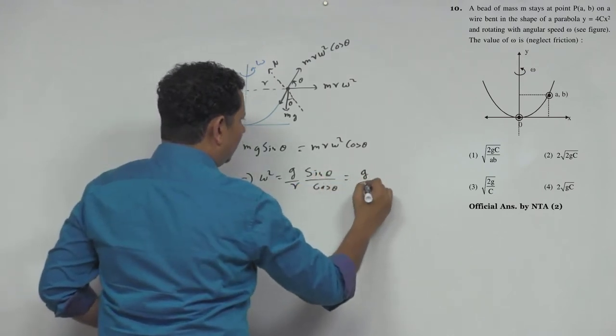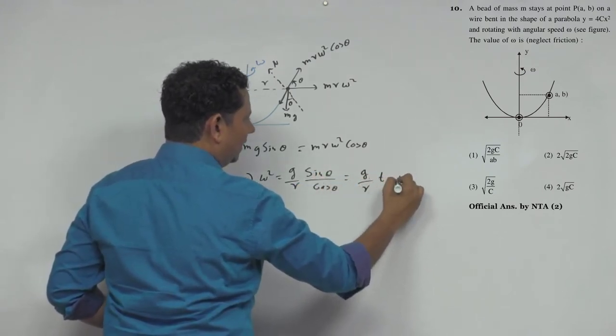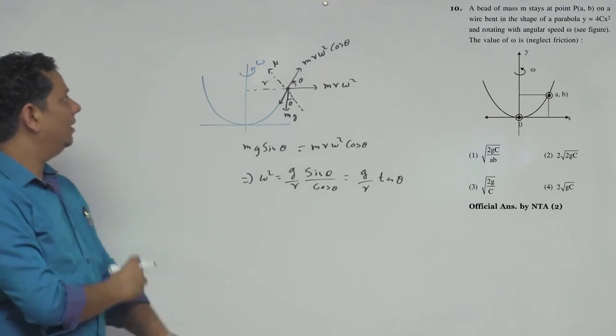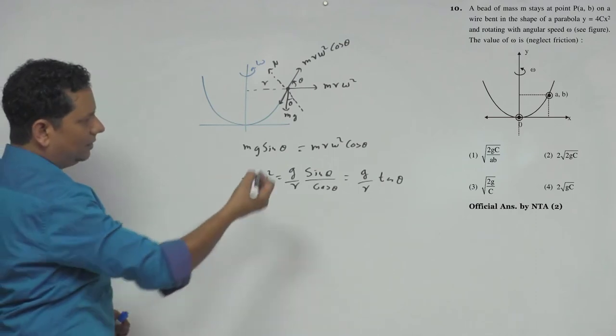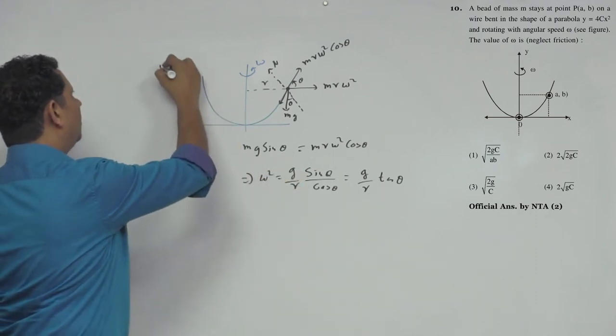This equals (g/r) tan θ. Now, look at the value of θ - as we go to different points, θ's value will vary.